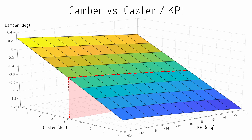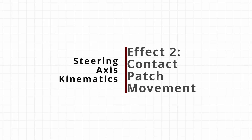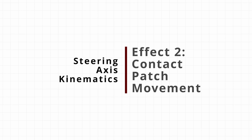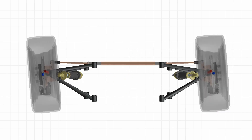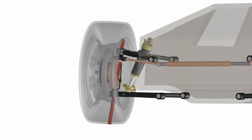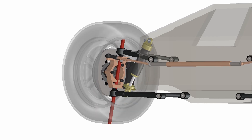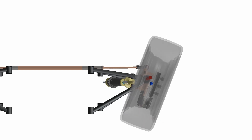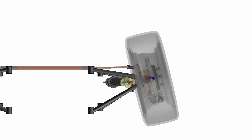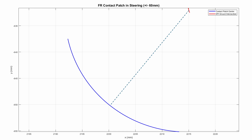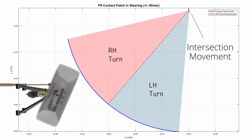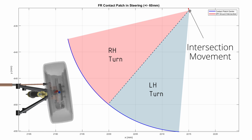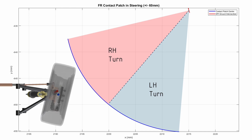The next effect to consider is how the centre of the contact patch moves as we rotate the wheels in steering. The axis of the steering, where it intersects with the ground, will act as a point of rotation for that contact patch centre. Looking at just the front right tyre, we can see the contact patch move on a blue line around this intersection point. The intersection point itself will also move a little as the vehicle steers — we'll see this later when we get into the jacking effects. In this particular case there is 15 mm of mechanical trail and about 18 mm of scrub radius.